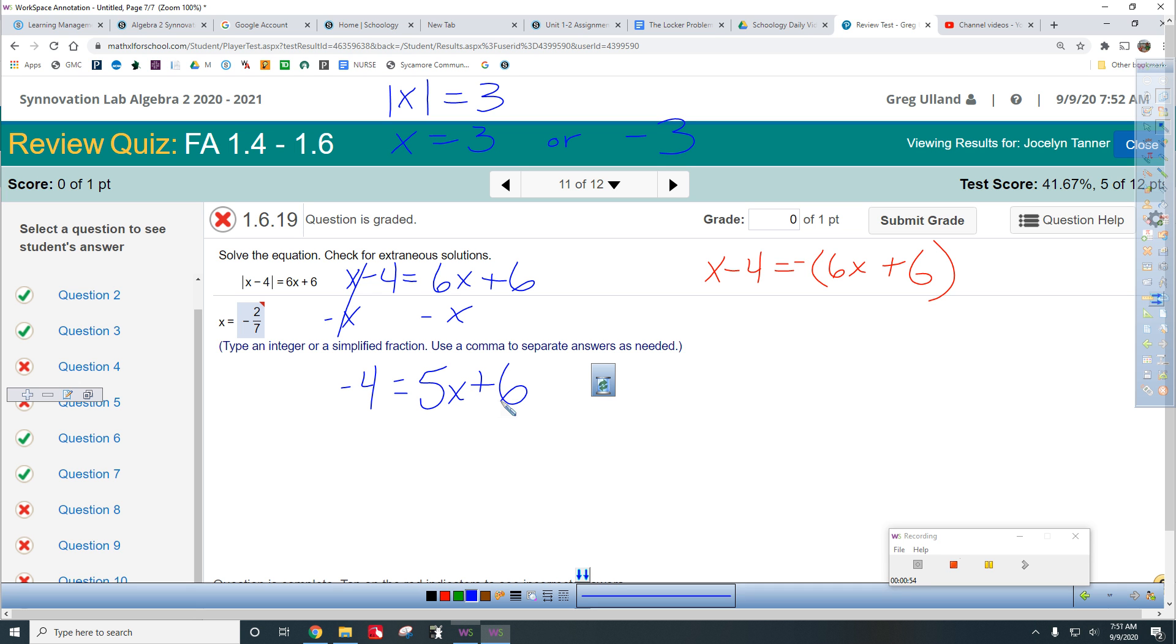Add 6 to both sides, and you get 2 is 5x. Divide each side by 5, and then you get 2 fifths. So then you've got to check your answer, and if you plug in your answer and check it, you'll find out that that does not satisfy. It doesn't work.